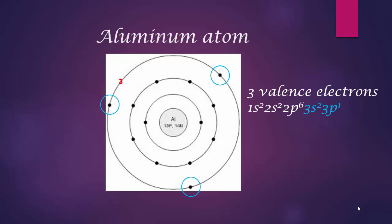If you look at the highest energy level, you see that there are 3 electrons here. 2 in the s orbital, 1 in the p orbital. 2 plus 1 equals 3, 3 valence electrons.